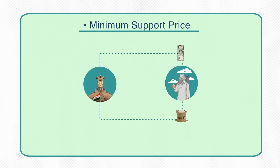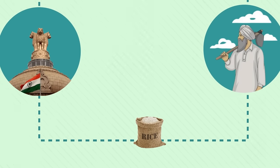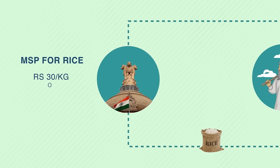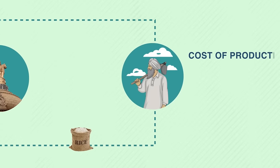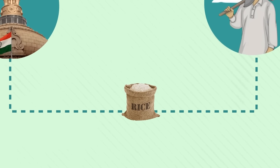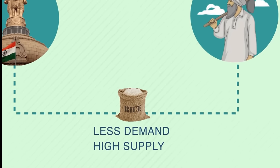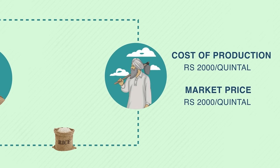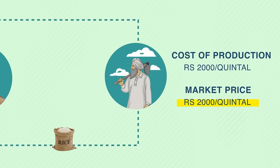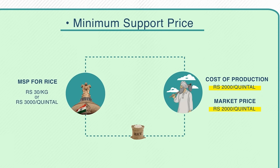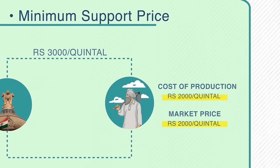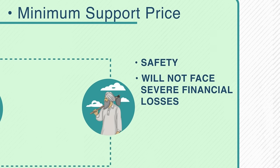In simple words, the minimum support price is the fixed amount that the government is supposed to pay the farmers regardless of demand and supply in the market. For example, let's say the government sets the minimum support price of rice to be 30 rupees a kilo or 3,000 rupees a quintal, and the cost of production is 2,000 rupees per quintal for the farmer. But if this year the demand for rice is very low and the supply is very high, the market price will drop to 2,000 rupees per quintal — the same as the cost of production. Because of the MSP, you will have the option to sell your rice to the government at a guaranteed price of 3,000 rupees per quintal.